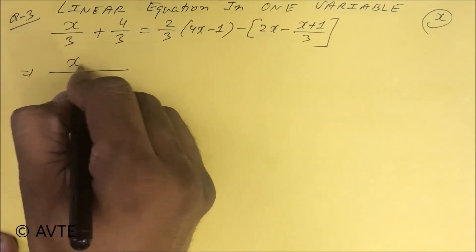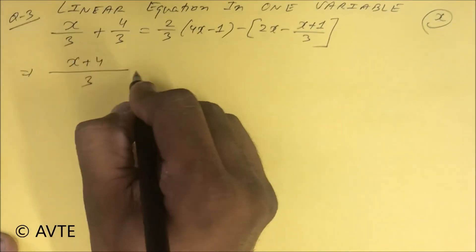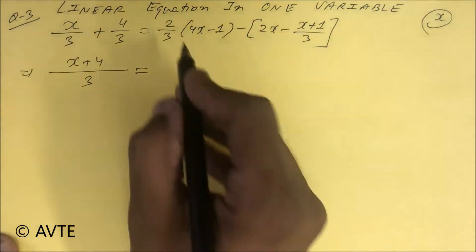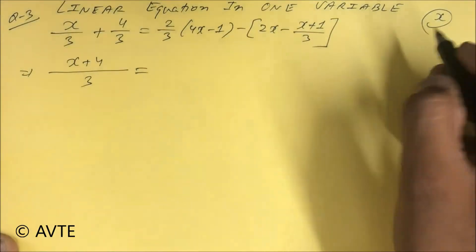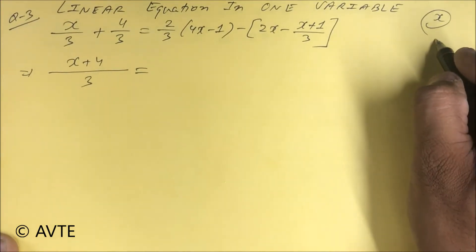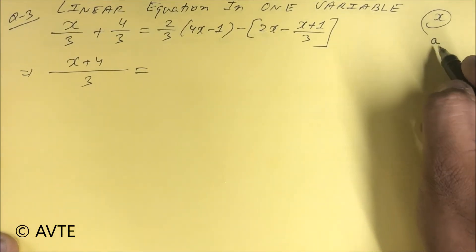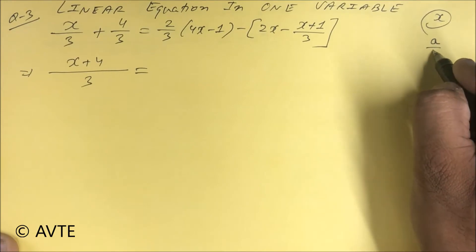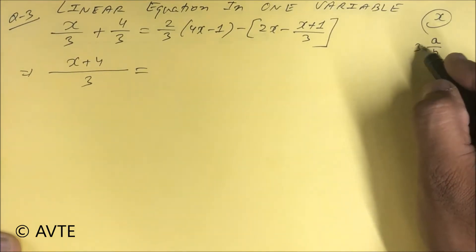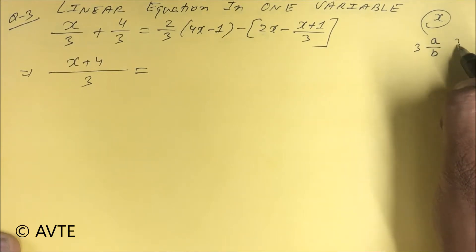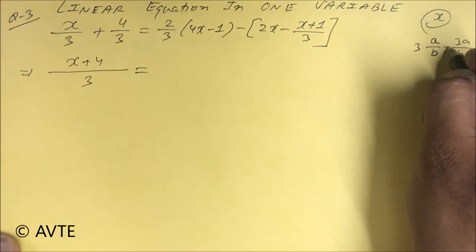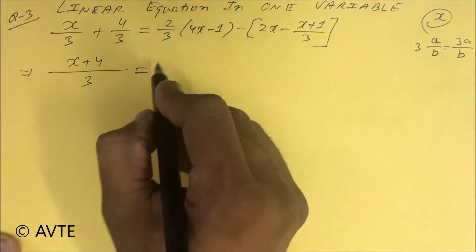The LCM is three and this is x plus four. Now you have to look into this. Sometimes students are confused: when you see a upon b and here is three, in algebra this is not a mixed fraction — it is three upon b. Got it?